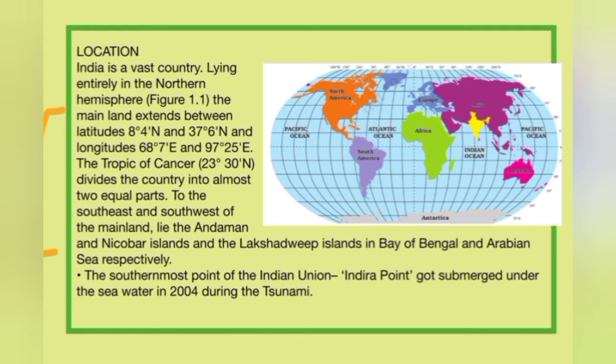Here is a 'Do You Know' fact from the book: the southernmost part of the Indian Union, known as Indira Point, got submerged under sea water in 2004 during the tsunami. So the southernmost point of India was called Indira Point, and it was submerged in the 2004 tsunami — this is something you need to remember.